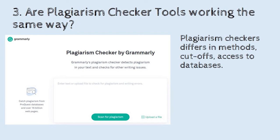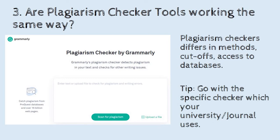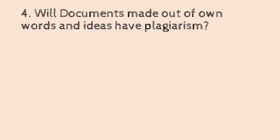Are all plagiarism checker tools working the same way? No — plagiarism checkers differ in their methods for screening. Their cut-off values are different: some software allows up to 5%, some up to 10%, and some even up to 25%. Access to databases will also be limited. In general, online website-based plagiarism checkers are not as rigorous, but downloadable software tools are more rigorous and will flag more plagiarism. The tip is to go with the specific checker used by your university or journal.